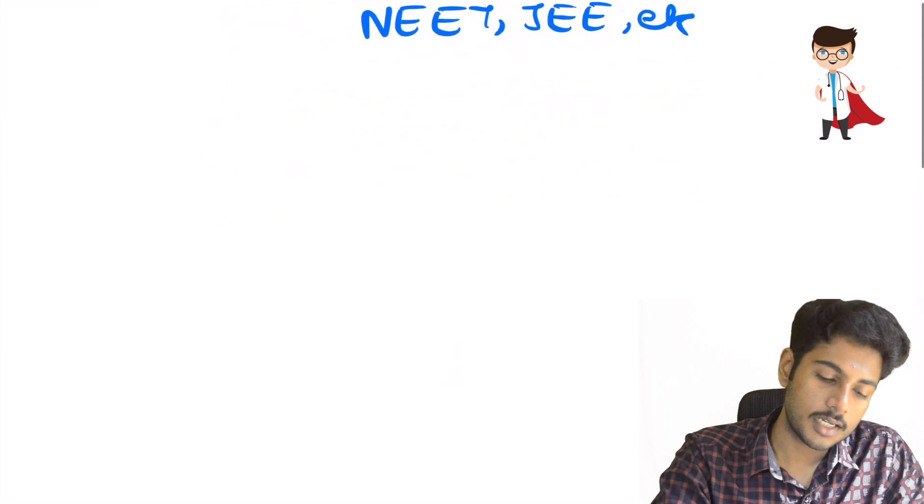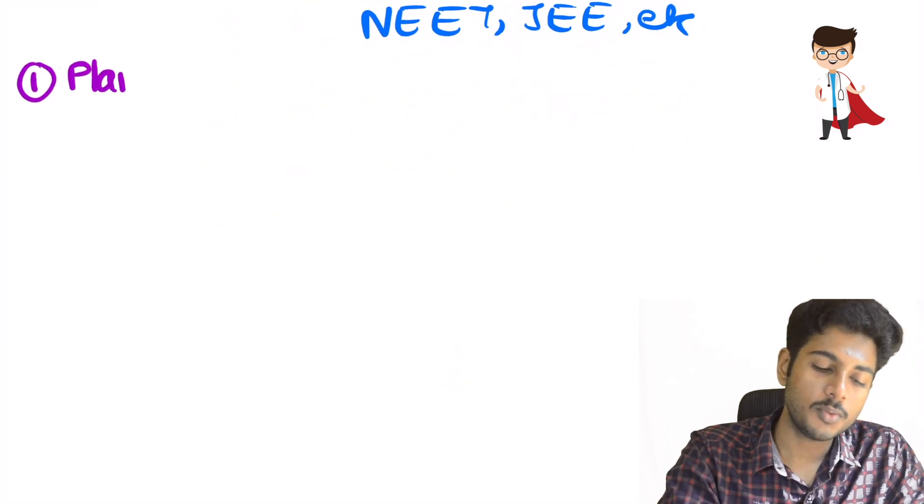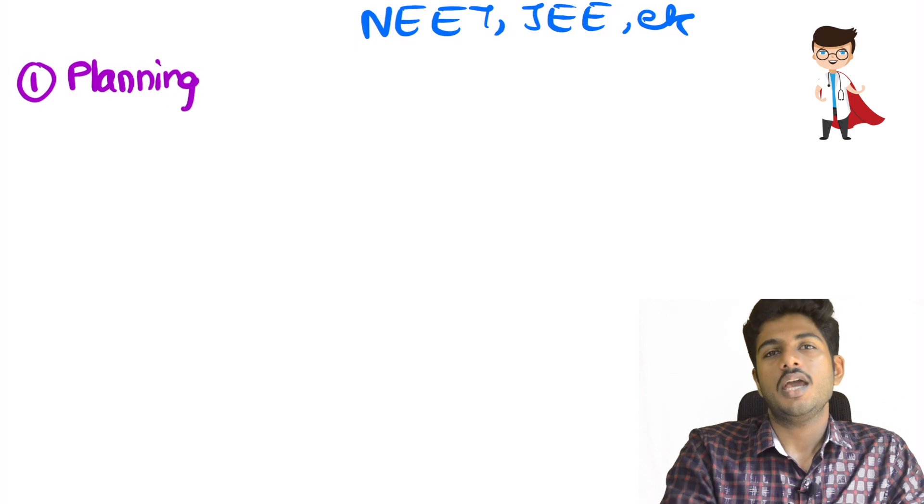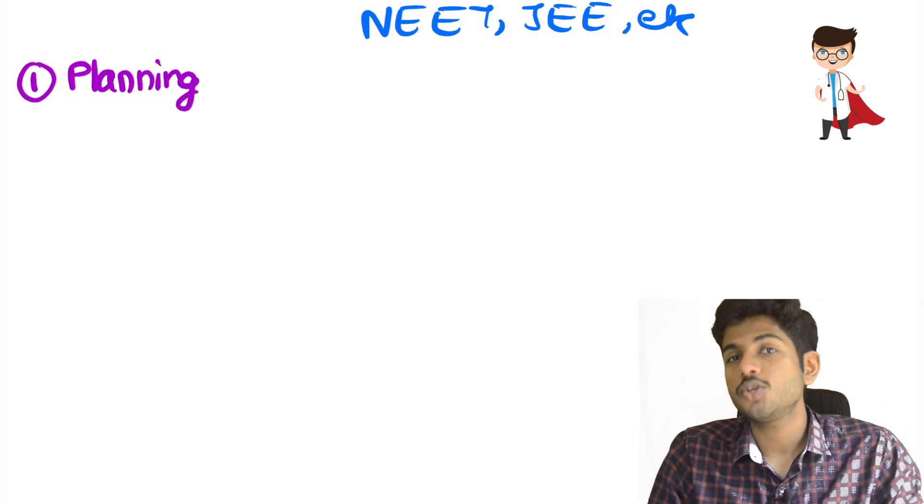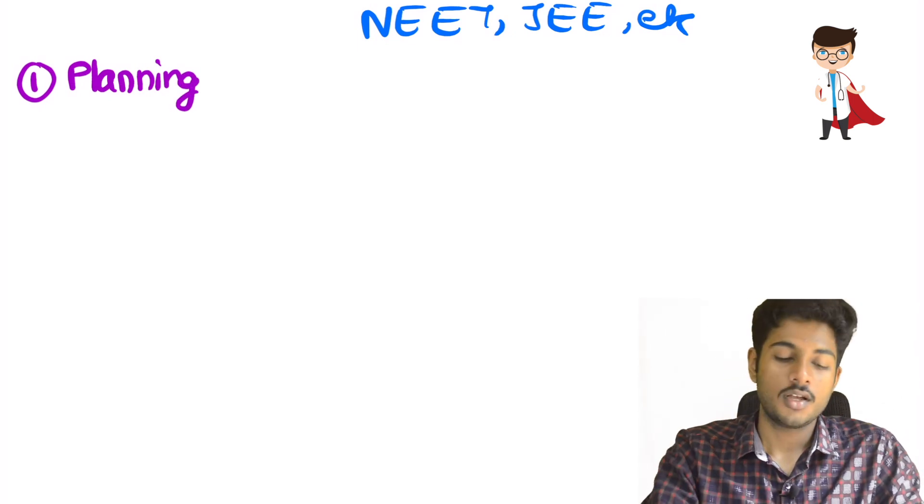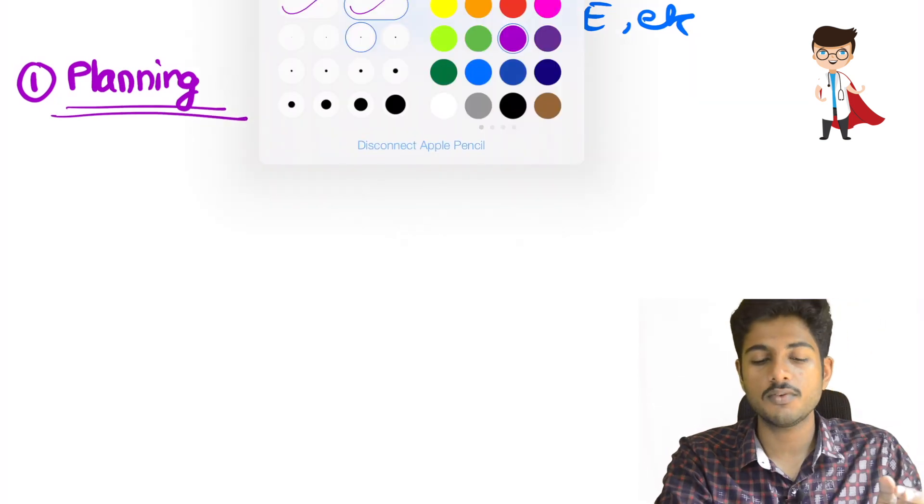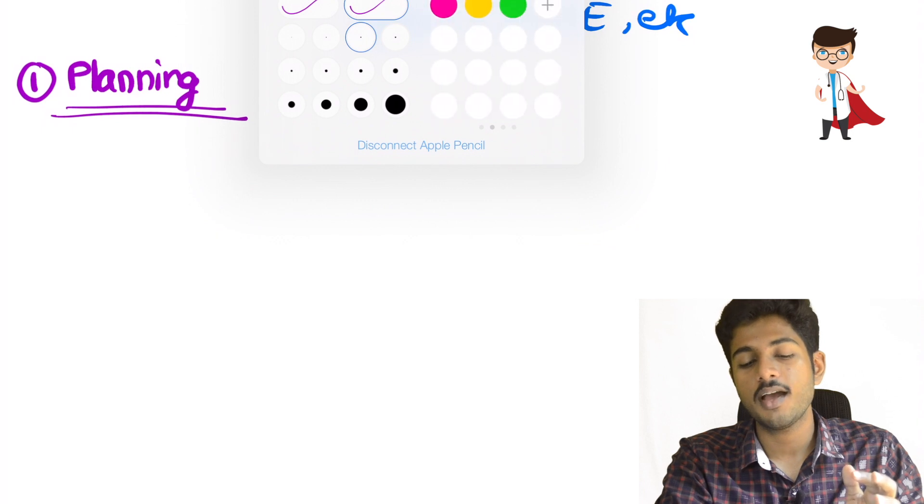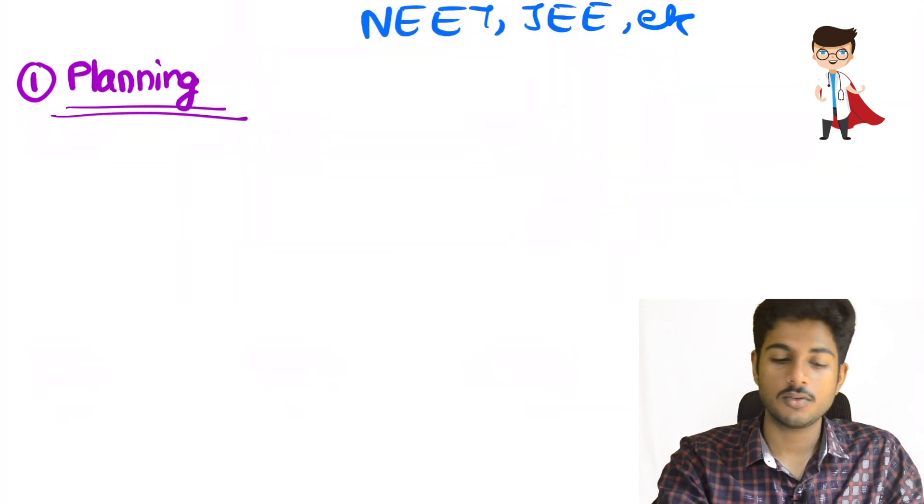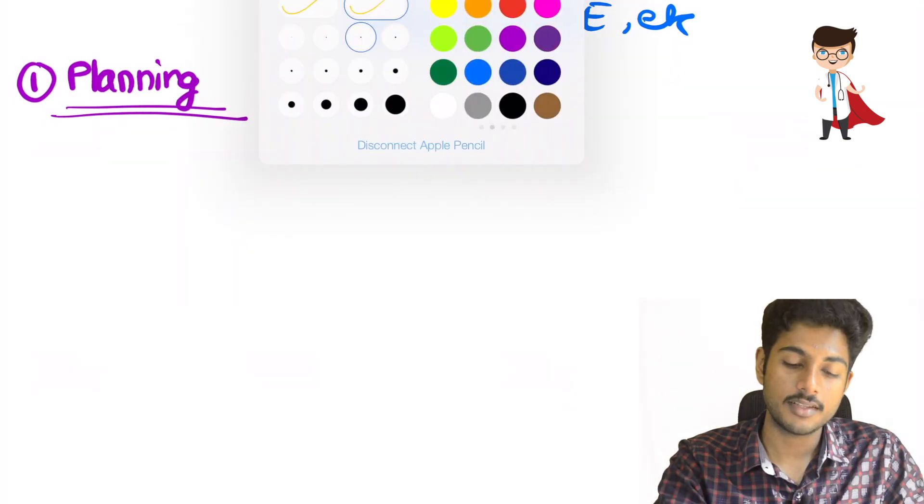The first point I would like to cover is planning. You have to plan. There's a beautiful quote: if you fail to plan, you are planning to fail. So we have to plan what we are going to do because there's a huge amount of information, a huge amount of study. Unless you plan properly, you might not be able to complete everything properly.